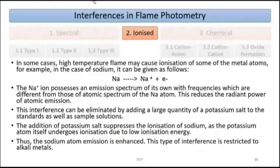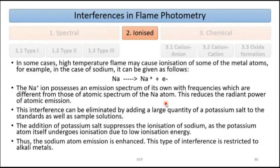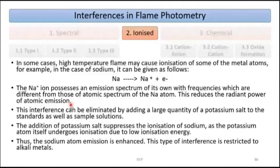Ionization interference in flame photometry: at high flame temperatures, some metal atoms may undergo ionization. For example, sodium loses an electron to form sodium ion (Na⁺). The sodium ion possesses its own emission spectrum with frequencies different from those of the sodium atom. This reduces the radiant power of atomic emission — out of 100 sodium atoms, if 20 are ionized only 80 absorb, so the detector reports fewer atoms than actually present.